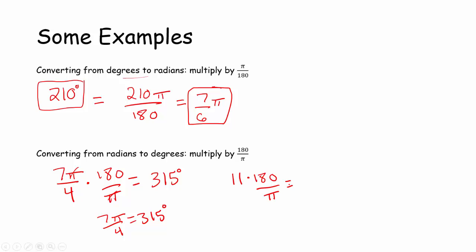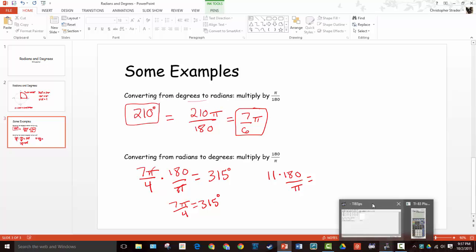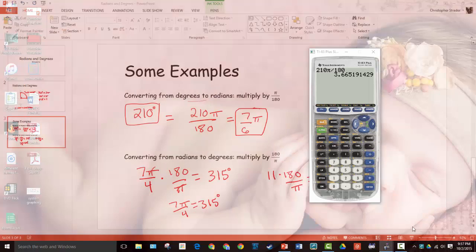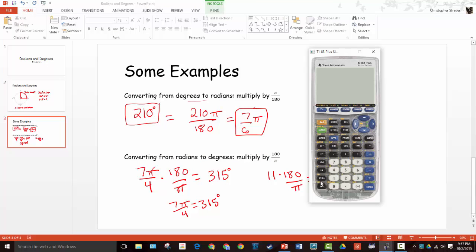I'm going to grab my trusty TI calculator here and do 11 times 180 divided by π. So 11 radians, that's a 630.3 degree angle.